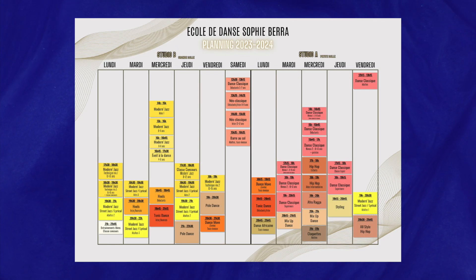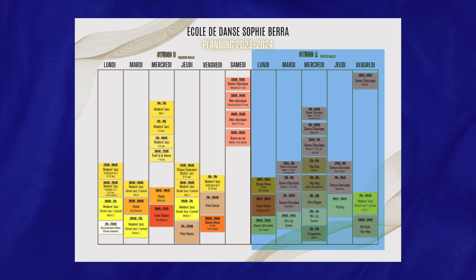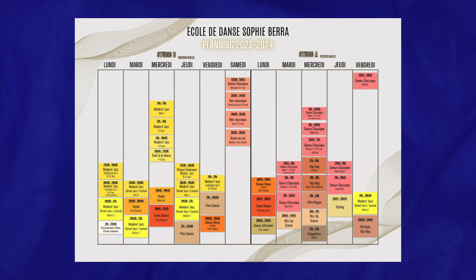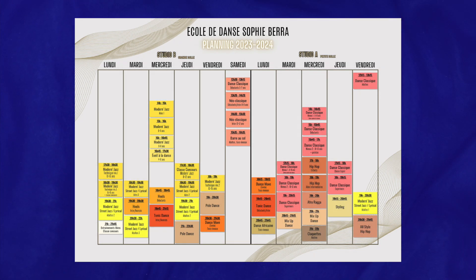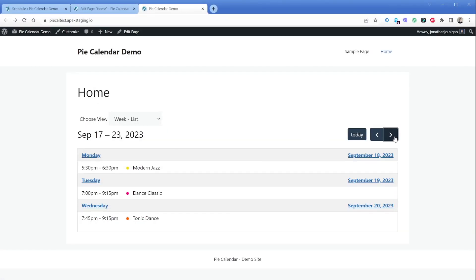Let's take a look at this schedule that our client shared with us. As you can see, this particular studio has two different schedules — one for Studio A and one for Studio B. Inside each of these days of the week, there are a number of different classes with varying times and additional information like the difficulty level of the class. These events repeat every week, and we will achieve this utilizing our plugin called Pi Calendar Pro, as it offers both recurring events and color-coded events.